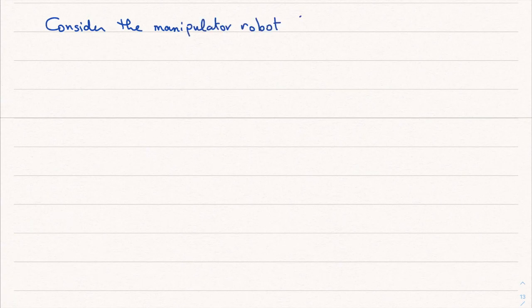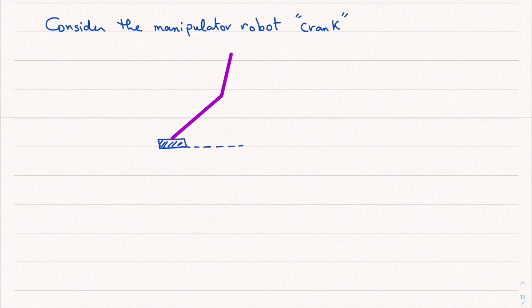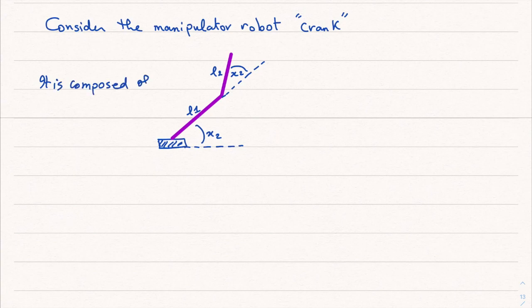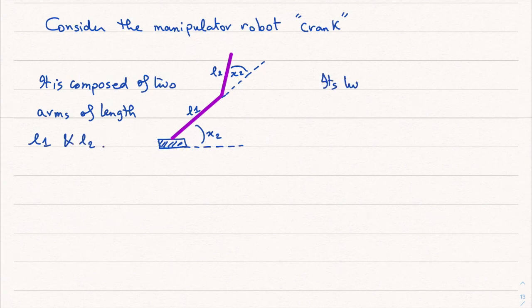Consider the manipulator robot which is called crank. Here we have the base, here the first arm, and here is the second arm. Here is the angle x2 and here is the angle x1. We have the length of the arms l1 and l2. It is composed of two arms of length l1 and l2.